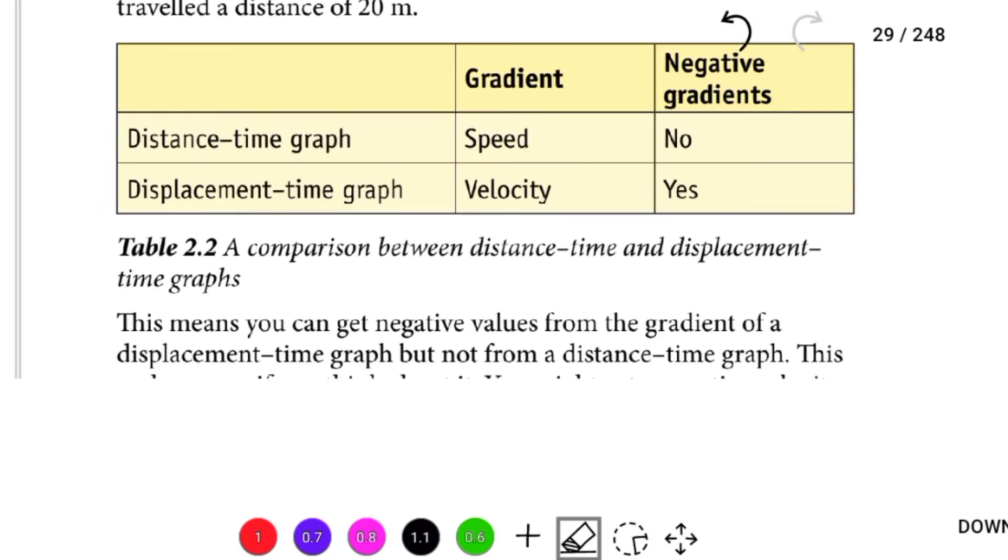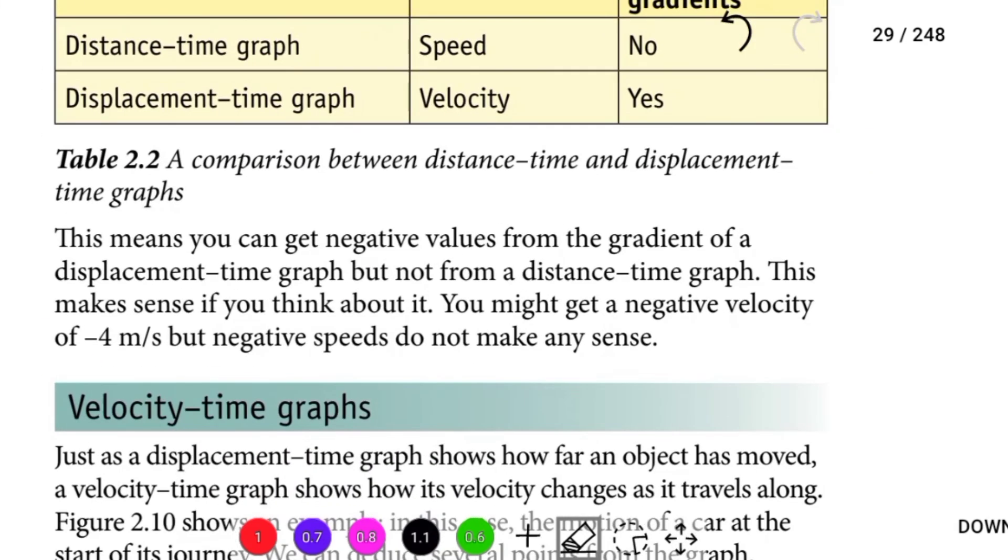This means you can get a negative value from the gradient of a displacement-time graph, but not from a distance-time graph. This makes sense if you think about it. You may get a negative velocity of minus 2 meters per second, but negative speed does not make any sense.